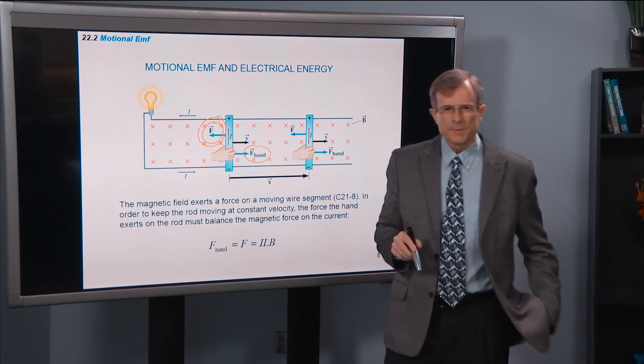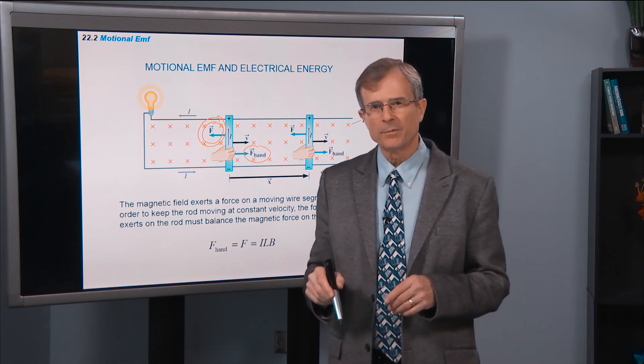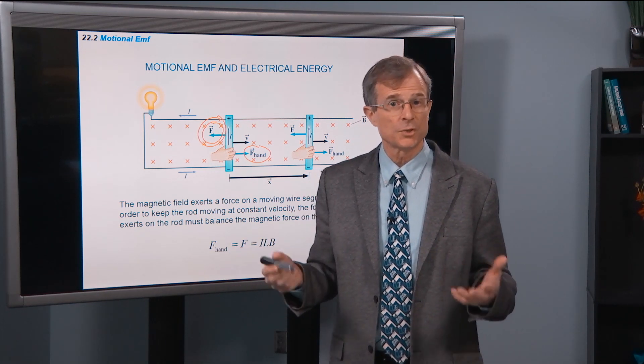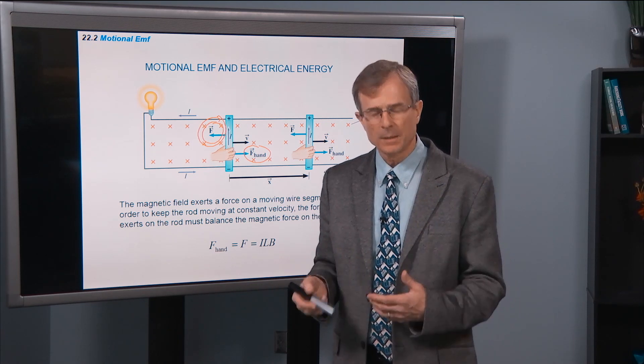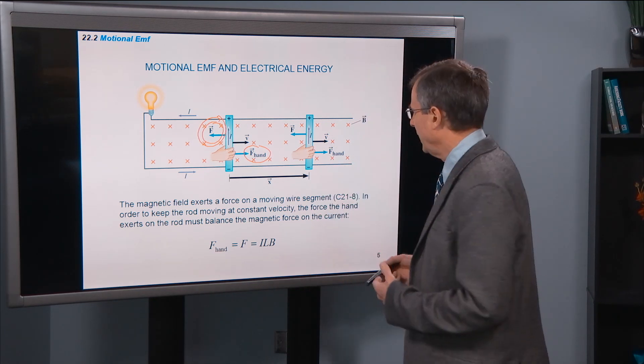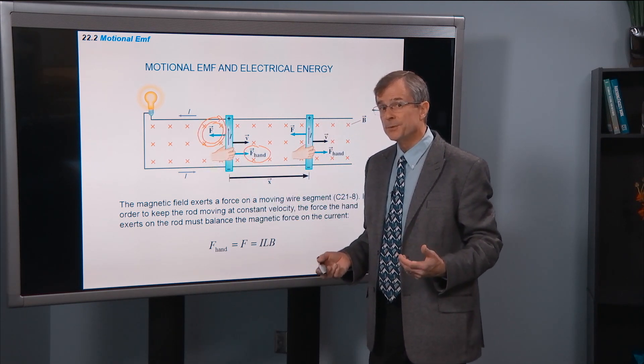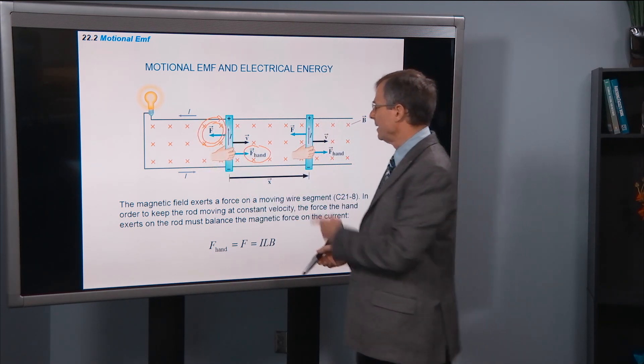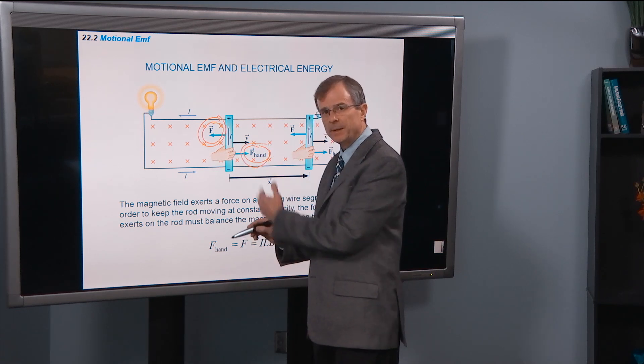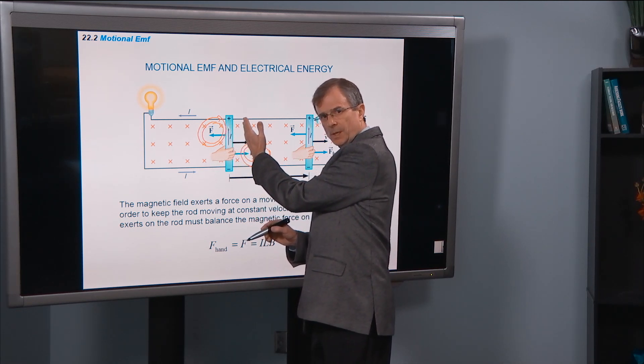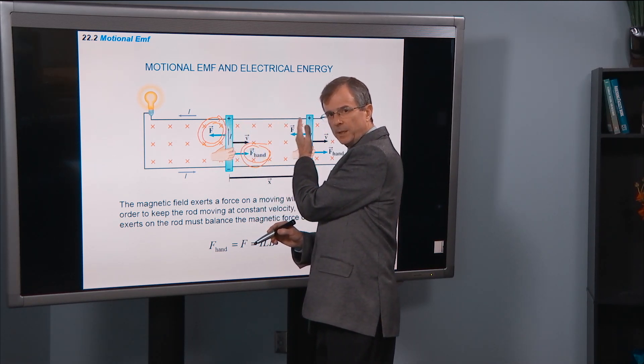What I'm trying to point out here is that you don't get, you can't get something for nothing. Perpetual motion machines just don't work. You can't get something for nothing. And it's like we're getting this energy to power this light bulb, but where did the energy come from in the first place? Well, it comes from your hand, pushing on that bar, conducting bar to keep it going.